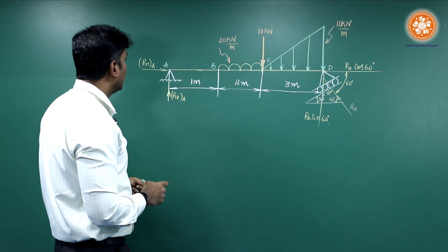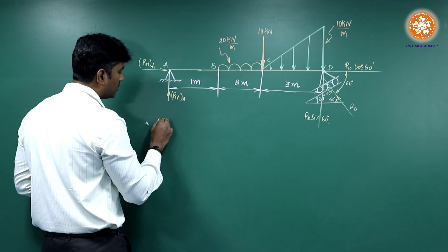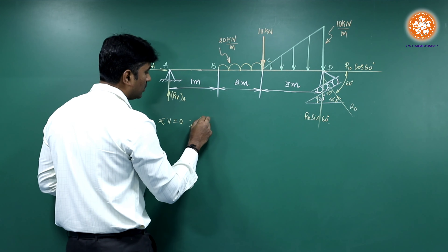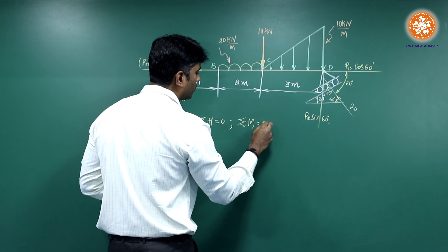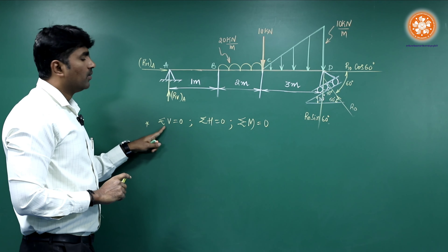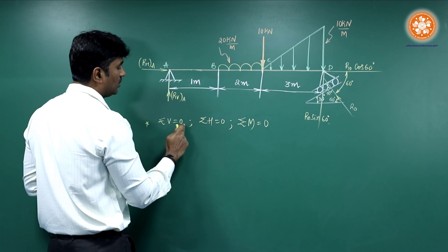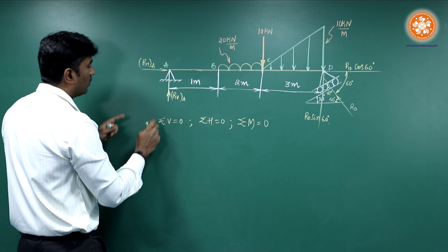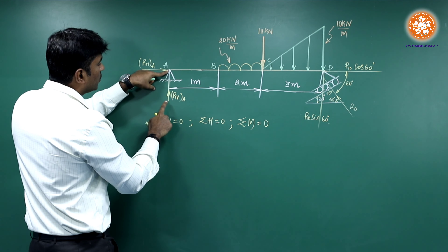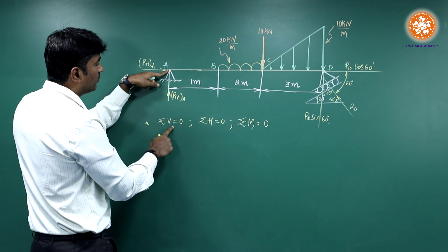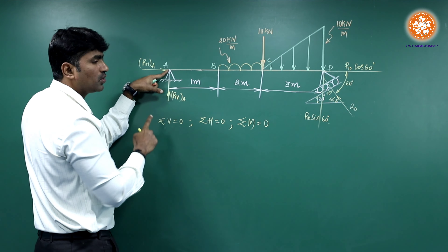For the equilibrium conditions: summation of vertical forces equals zero, summation of horizontal forces equals zero, and summation of all moments equals zero. For the vertical forces, any force acting upward is taken as positive and downward as negative — the same as the graph convention.